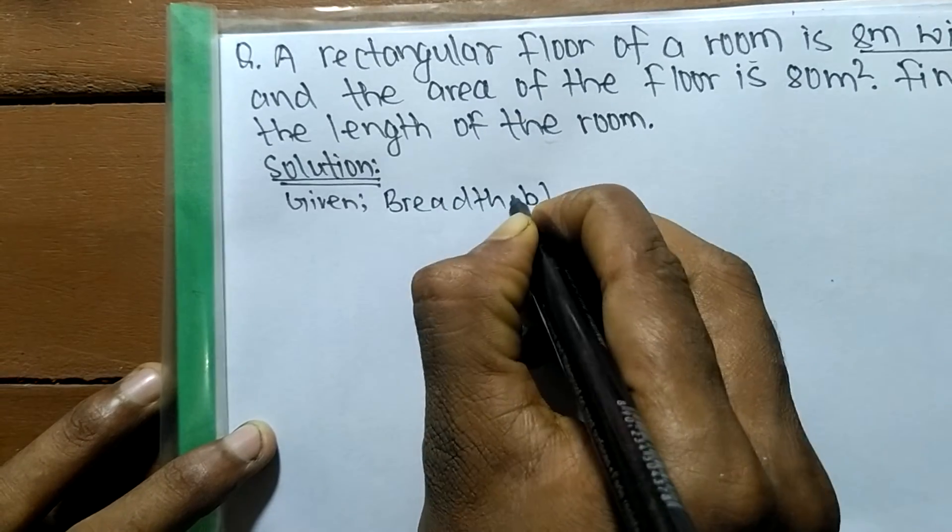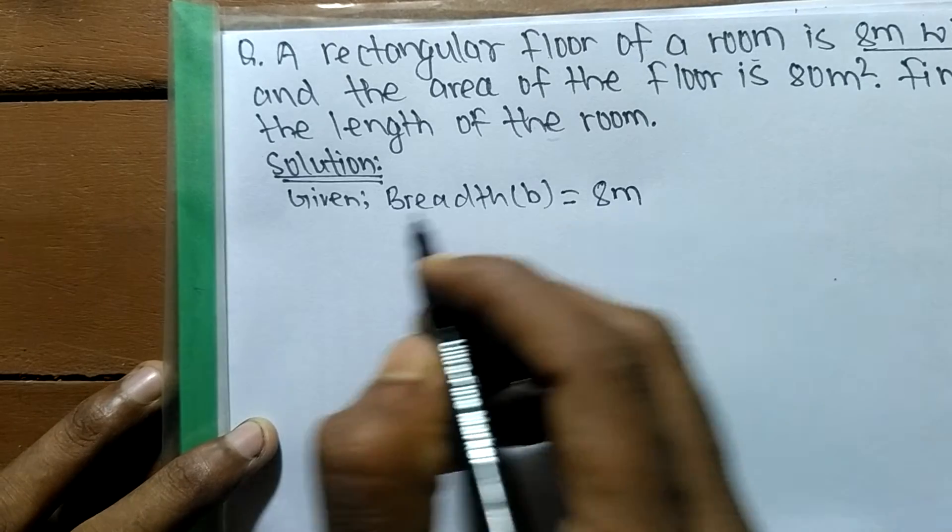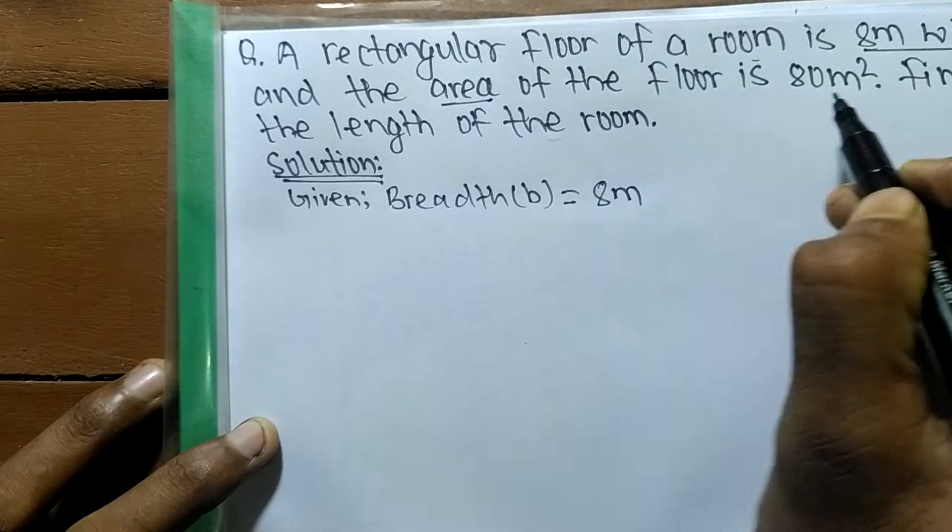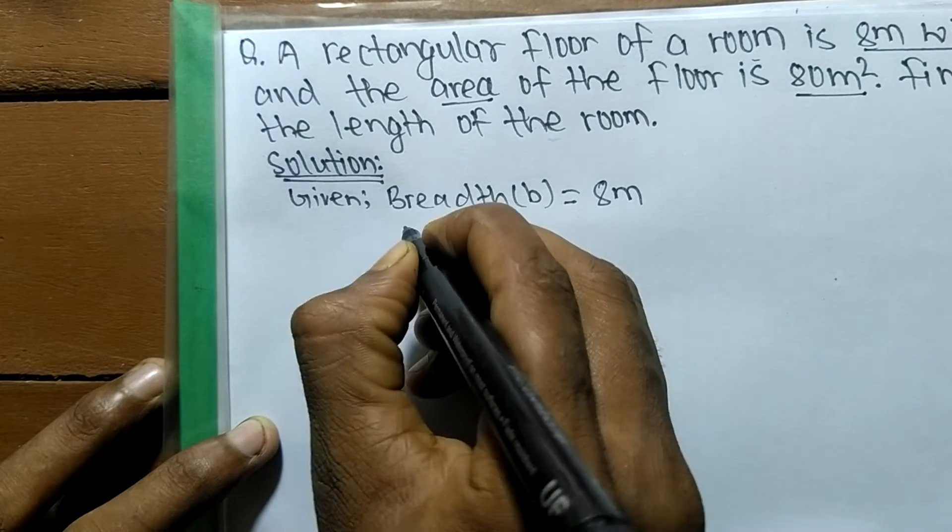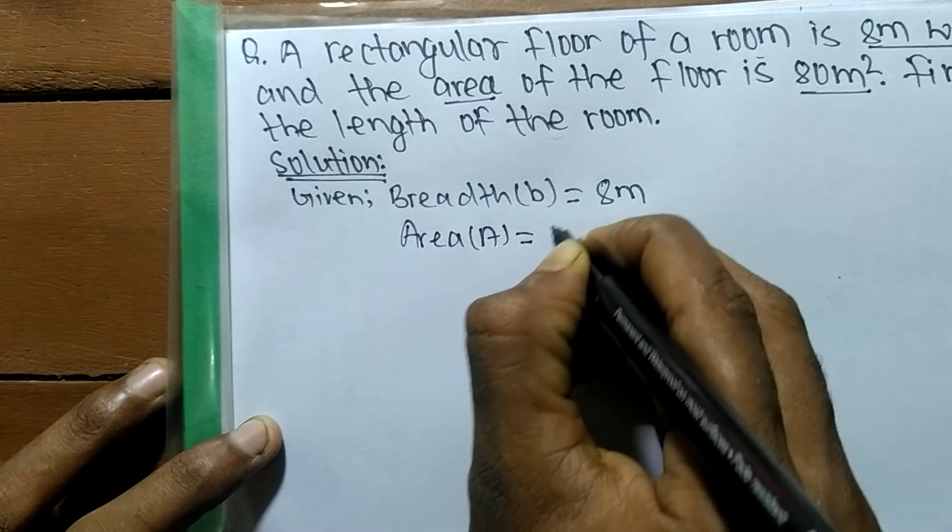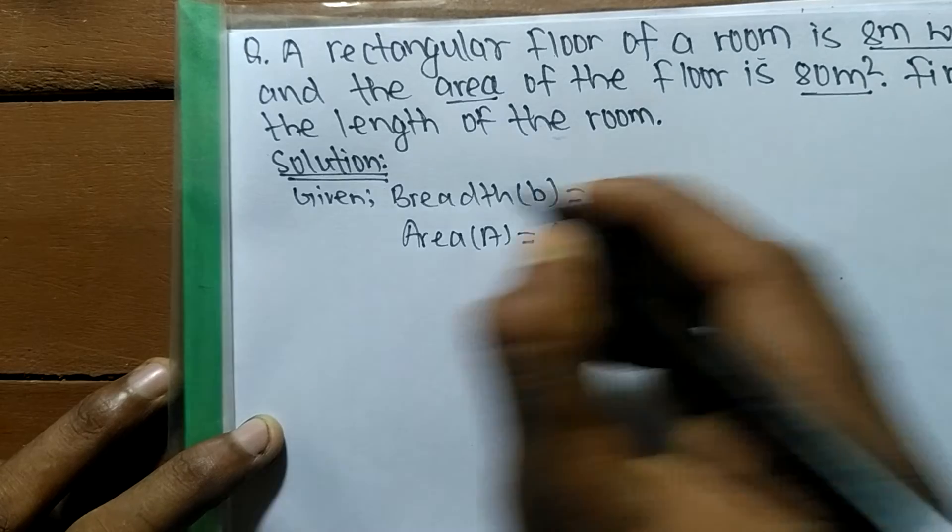Breadth, which we denote by b, is equal to 8 meters. And the area of the room, we have given area which is equal to 80 square meters. So area A is equal to 80 m².